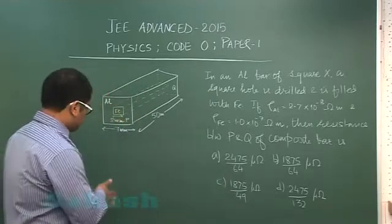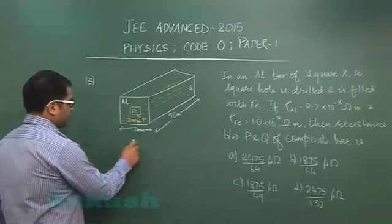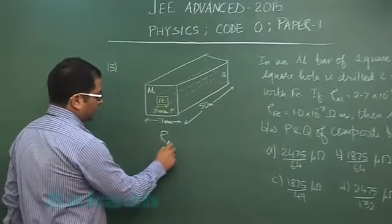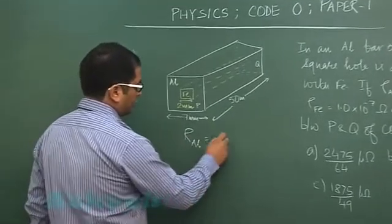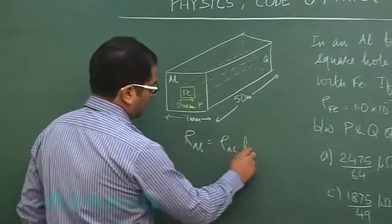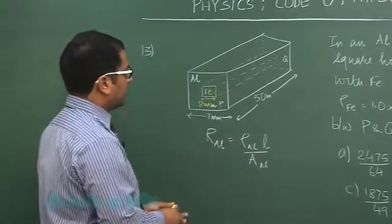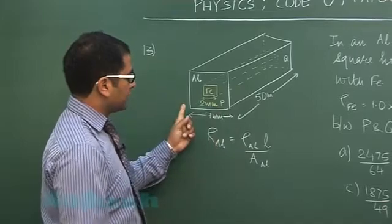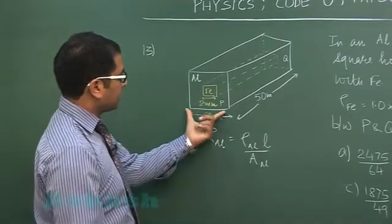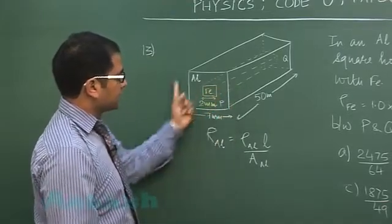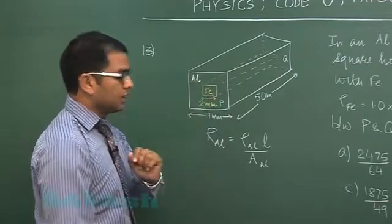Now if you see, R1 where 1 is aluminum would be rho length by area of aluminum. The area of aluminum face has to be taken as 45 because 7x7 is 49, this complete area minus 4, that would be 45. And length is given as 50 meters, resistivity is given there.